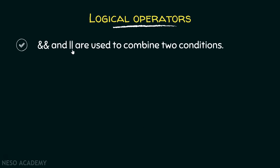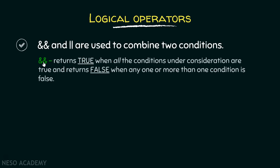AND and OR are used to combine two conditions. AND returns true when all the conditions under consideration are true — meaning if all the conditions are true, then only it will return true. And it returns false when any one or more than one condition is false.